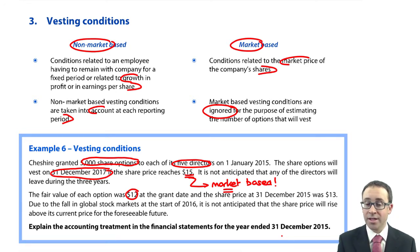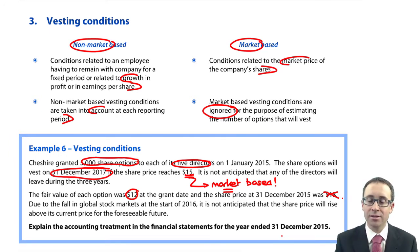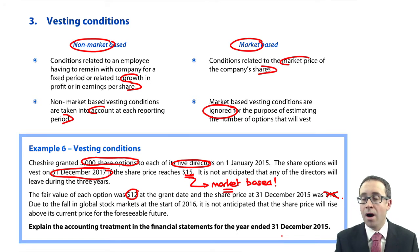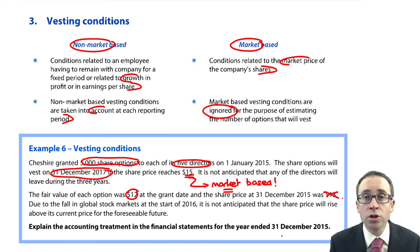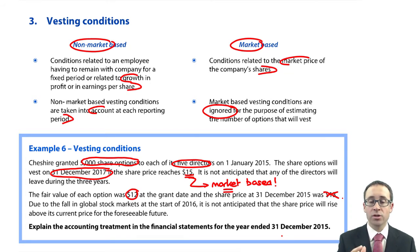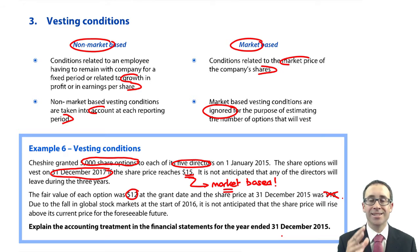The fair value was $13 on December 2015, but we can ignore that because we're looking at equity-settled share options — we take the fair value at the grant date and ignore everything else. Due to the fall in global stock markets at the start of 2016, it is not anticipated that the share price will rise above its current price for the foreseeable future. So that market-based vesting condition at the end of the first year doesn't look like being met — but it doesn't matter, we ignore it. We do not make any adjustments; we just account for the non-market-based vesting condition as standard.